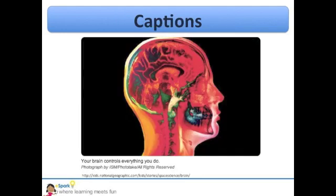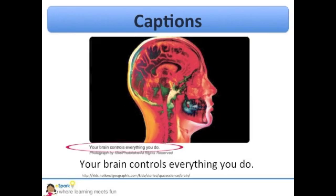I was reading this article about the brain and I learned so much. The article was called Your Amazing Brain and it was in my National Geographic Kids catalog that came in the mail yesterday. Looking back at the article, I can quickly see some of the key facts that I learned. First, I can look at this picture that was at the top of the article. Not only does the picture help me understand what the text is about, but the caption gives me a look into what I will learn. It says, your brain controls everything you do.